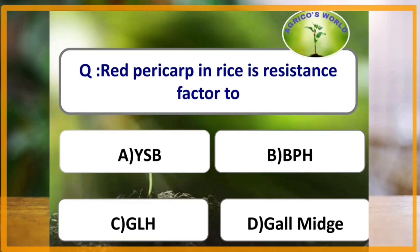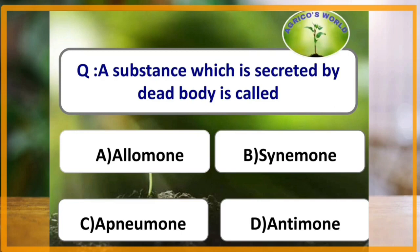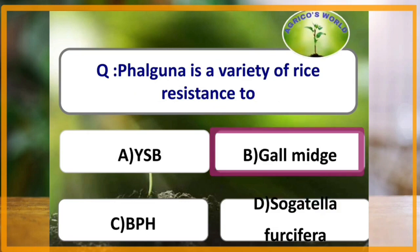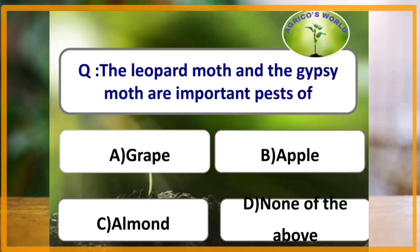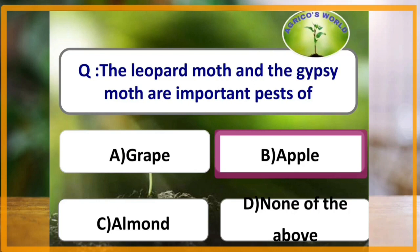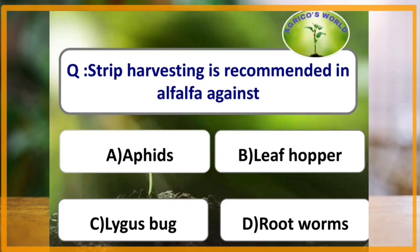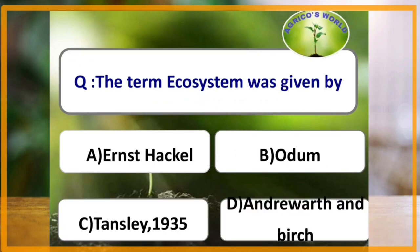Antixenosis is a mechanism employed by the host plant to deter or reduce colonization by insects. Red pericarp in rice is a resistant factor to brown plant hopper. A substance secreted by the dead body is called necromone. Falguna is a variety of rice resistant to gall midge. The leopard moth and the gypsy moth are important pests of apple. Strip harvesting is recommended in alfalfa against Lygus bug. The term ecosystem was given by Tansley in the year 1935.